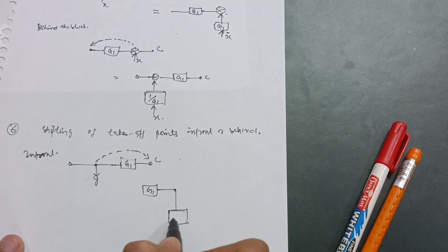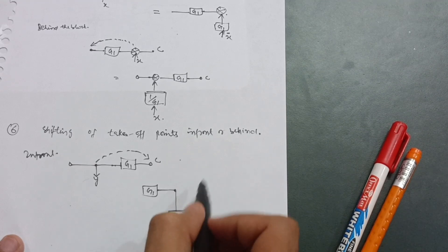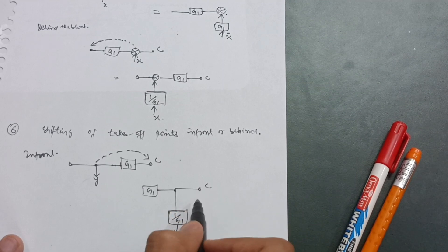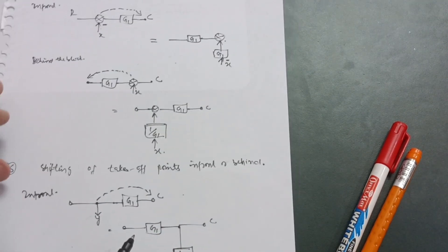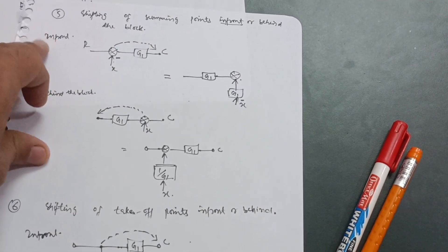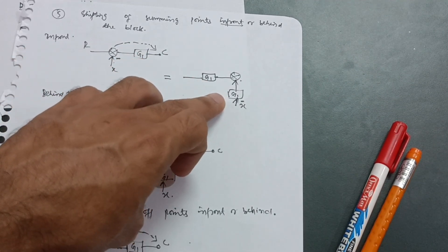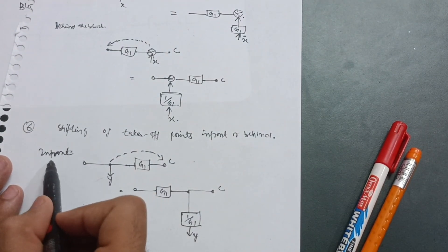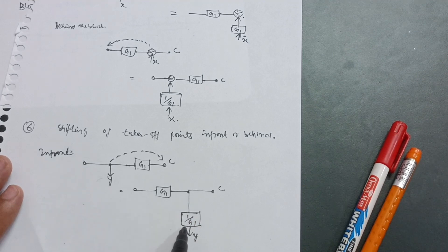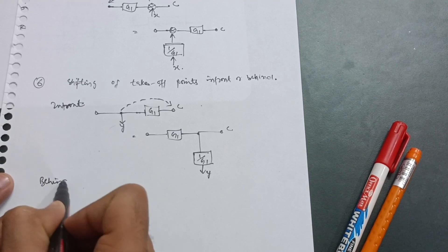Notice that in the in-front case of summing points (Rule 5), you were adding the block value G1 to the feedback, but for the takeoff point in-front case, you add the inverse 1/G1. The output C remains the same. So for takeoff points, shifting in front means adding the inverse — it is totally opposite to the summing point rule.